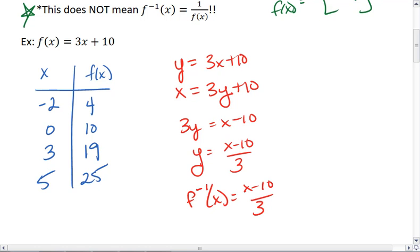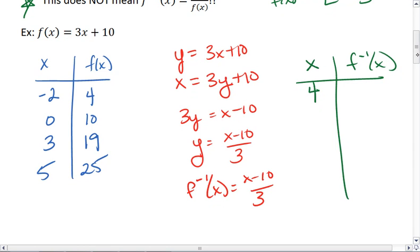Well, let's construct a table for f inverse. If we plug in 4, we get 4 minus 10, which is negative 6. Divide by 3, that's a negative 2. Let's plug in 10. 10 minus 10 is 0. Divide by 3 is 0. 19 is a positive 3. 25 is 5.